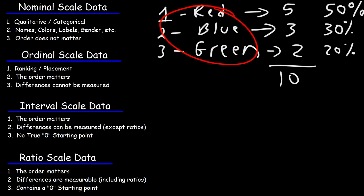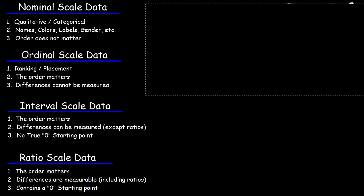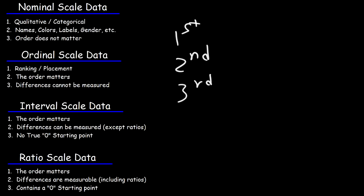So let's talk about the second one, the ordinal scale data. This type of data is typically used to rank things. Let's say if you have a race — there's a first place winner, a second place winner, and a third place winner. This would be ordinal scale data because the order matters. However, the differences cannot be measured.